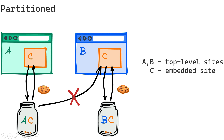Using cookie partitioning, a third-party service that sets a cookie within one top-level site cannot retrieve that cookie when embedded in other top-level sites. As shown in the diagram, top-level sites A and B both embed service C, but cookies created from context A are stored in a separate cookie jar from those created through context B. There is no cross-access between the two — cookies created by embedded services are visible only to their specific top-level context.